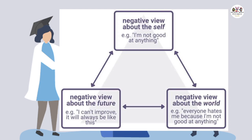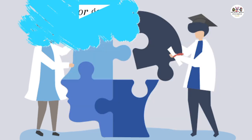مثال یہ ہے کہ 'everyone hates me because I am not good at anything' — کہ وہ سمجھتے تھے کہ ہر کوئی ان سے نفرت کرتا ہے کیونکہ وہ کچھ بھی نہیں کر سکتے، تو دنیا بھی ان کے بارے میں ایسے ہی سوچتی ہے۔ تیسرا یہ آجاتا تھا کہ انہیں اپنی future کے حوالے سے کیا negativity آتی تھی — کہ وہ یہ سوچتے تھے کہ ہم کچھ بھی improve نہیں کر سکتے، ہم صرف ہمیشہ failure ہی رہیں گے، اپنی life میں successful نہیں ہو سکتے۔